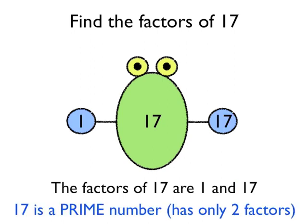And numbers which have just two factors are really special. They're called prime numbers and that's something that you definitely need to know. So if your factor bug has just two legs, that number has just two factors and we call it a prime number.